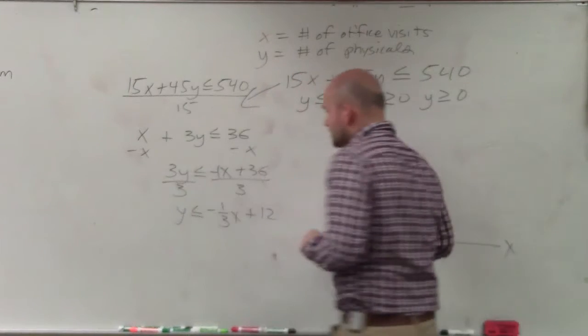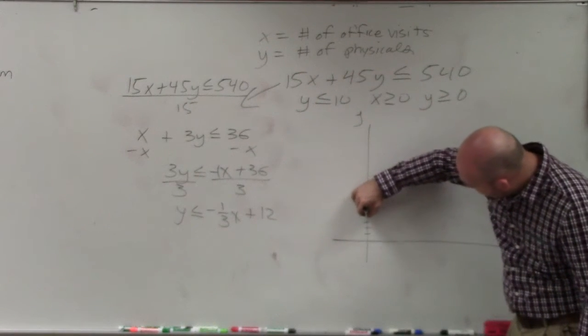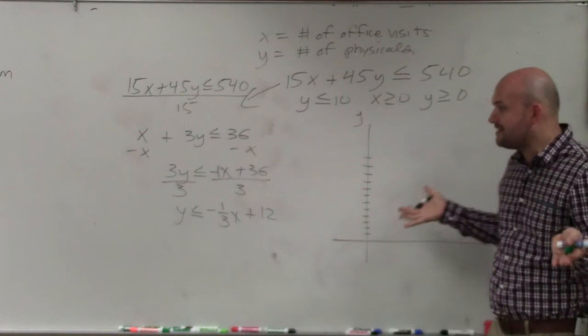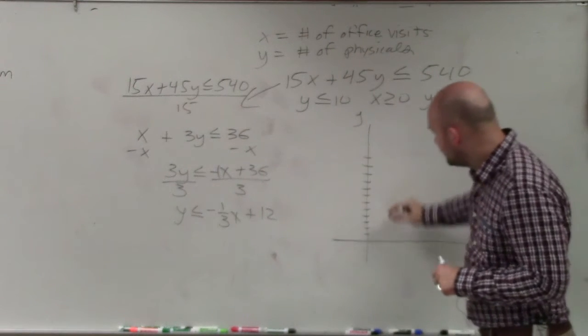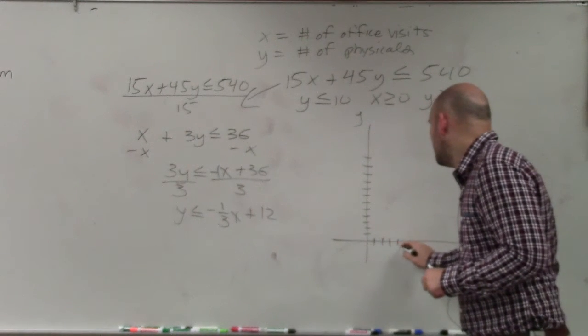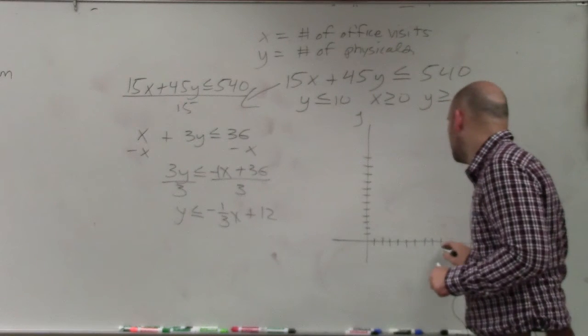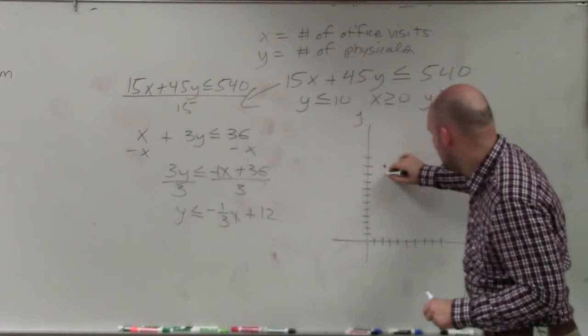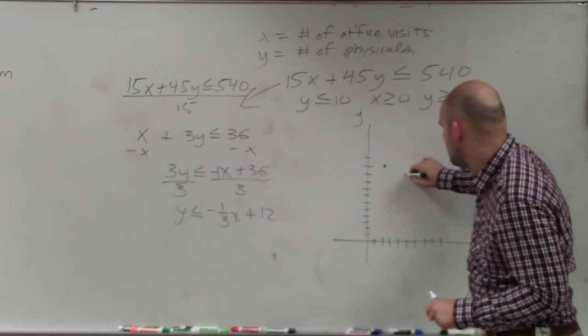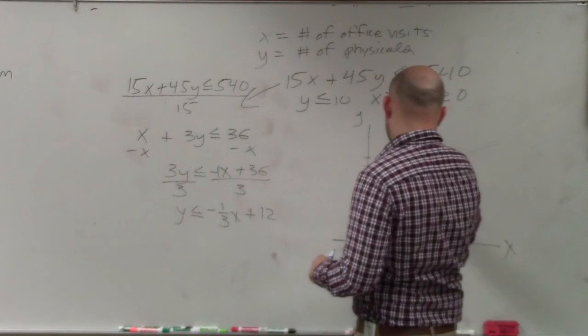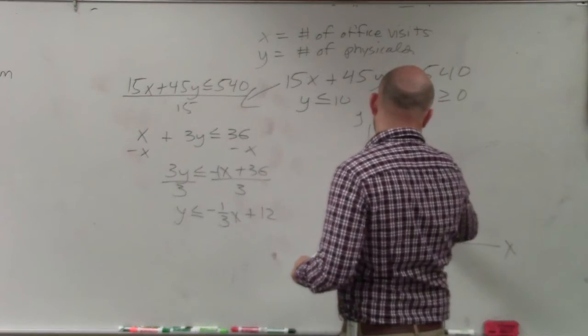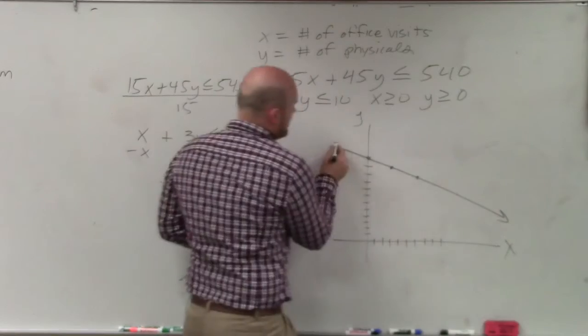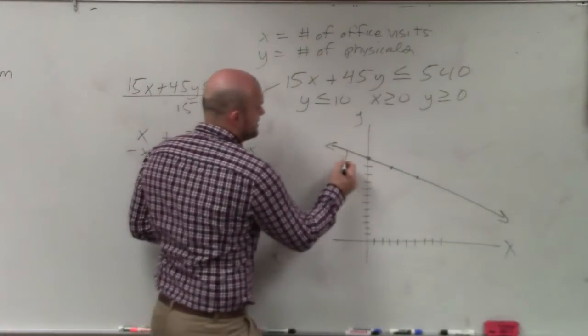x, y. So I go up to 12: 1, 2, 3, 4, 5, 6, 7, 8, 9, 10, 11, 12. And again, as we mentioned, I'm going to try to do my graphing the best I can. My slope is down 1 over 3. So I'm going to go down 1 over 3, down 1 over 3. Trying to graph the best I can.